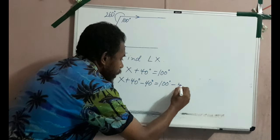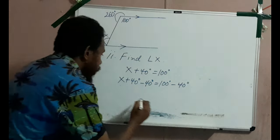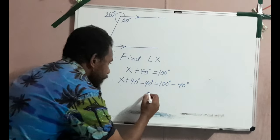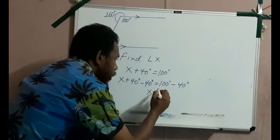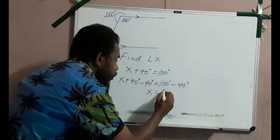So our left hand side is equals to x, and our right hand side is equals to 60 degrees.